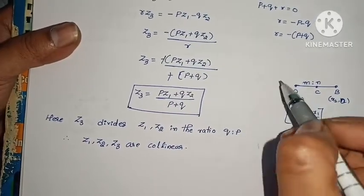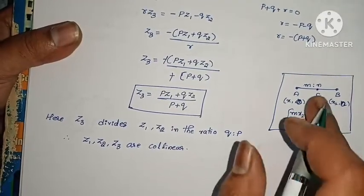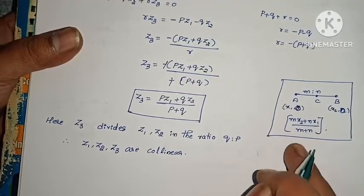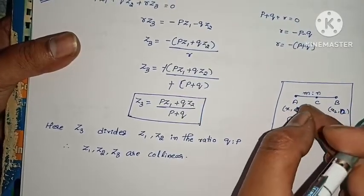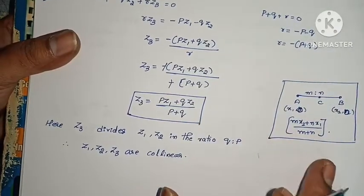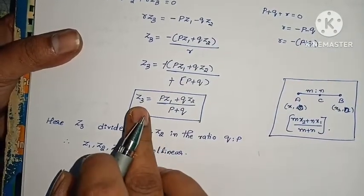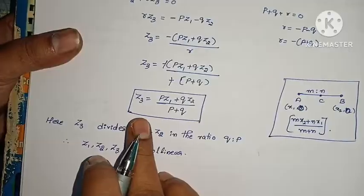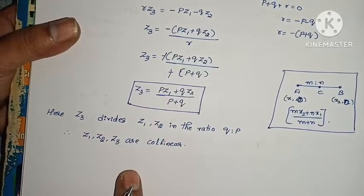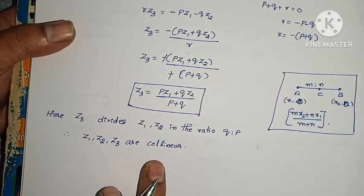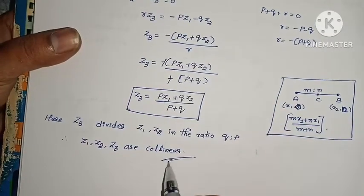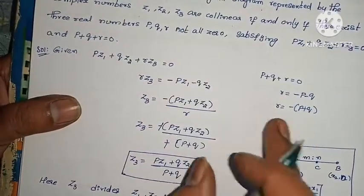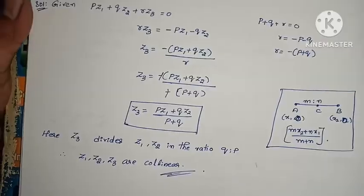If you recall 10th standard coordinate geometry, C divides AB in ratio M to N using the formula (Mx2 + Nx1)/(M + N). Similarly here, Z3 divides Z1Z2 in the ratio Q to P, which means Z1, Z2, Z3 lie on a straight line — they are collinear. This problem is complete. Very simple.